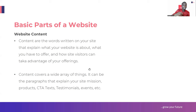The next part we want to look at is your website content. After the header and the featured visual, the next thing is your website content. Content is the words written on your site that explain what your website is about - what you have to offer and how your site visitors can take advantage of your offerings. Content covers a wide array of things: it can be paragraphs that explain your site mission, it can be the product, the CTA text (call-to-action text), testimonials, events - anything that makes up your communication medium on your website.